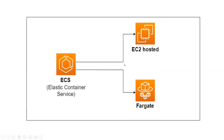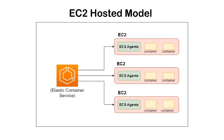Elastic Container Service can be implemented using the EC2 hosted model or the Fargate model. In the EC2 hosted model, we have clusters of EC2 instances. A cluster is a collection of multiple nodes, and in AWS these nodes are our EC2 instances. We create a cluster of a particular size and decide the number of nodes required. Containers then run on these dedicated EC2 instances.